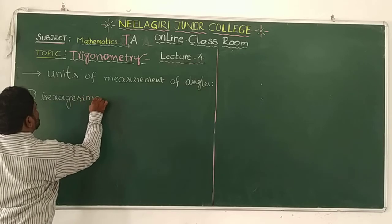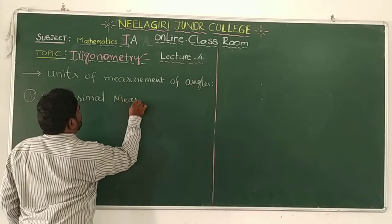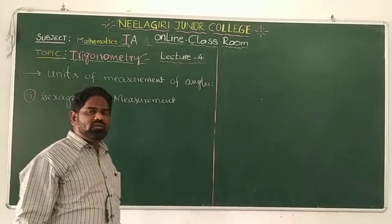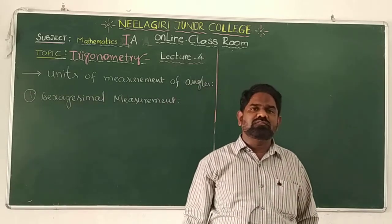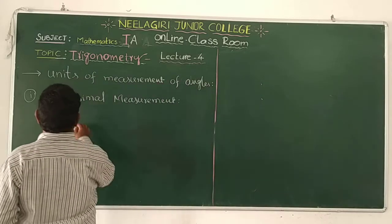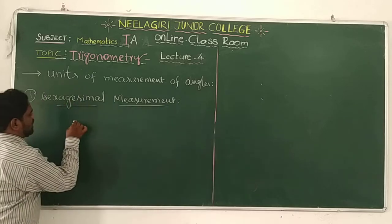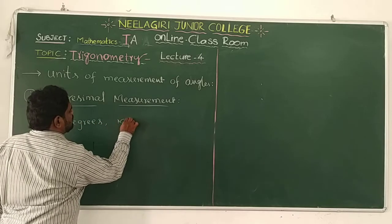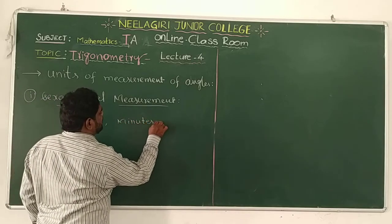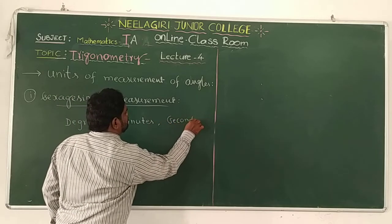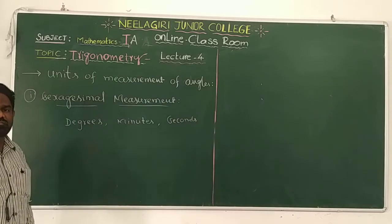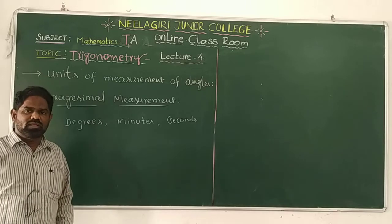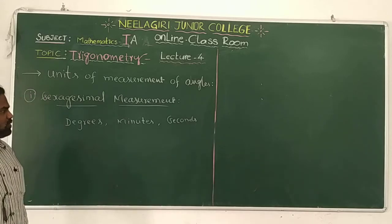In the sexagesimal measurement, we measure the angles in degrees, minutes, and seconds. Mostly we use this system to measure the angles. This is the British system — and also the Indian system — we use this system only.